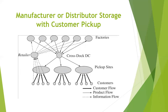The next method is manufacturer or distributor storage with customer pickup. Here, customers place order information to the retailer, who sends it to the manufacturer. The manufacturer sends all products to the cross-dock DC — a distribution center where products are stocked, segregated according to location (for example, by state), and then delivered to pickup sites. Pickup sites are places like retail shops nearer to the customer's city. Customers come to these pickup sites, collect their products, and leave. By doing so, transportation cost is reduced further because customers come to the pickup sites to take away their products.